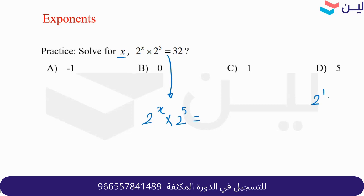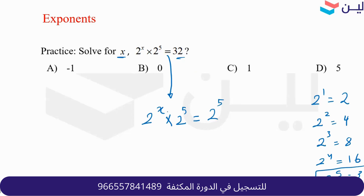Yes — 2 to the one is 2, 2 squared is 4, 2 to the third is 8, 2 to the fourth is 16, and 2 to the fifth is 32. So I write 32 as 2 to the fifth. Now using the product rule, x plus 5 equals 5. Whenever we have an equation with the same bases, we only work with the powers. Same power means work with the bases. Here the bases are both 2, so x plus 5 equals 5.